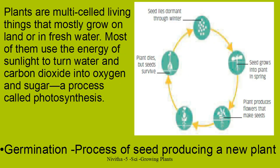How can plants be grown? Plants can be grown in very many ways. Most importantly, plants are grown from seeds. Seeds lie dormant during winter and then grow into a plant in spring. The plant produces flowers, flowers become fruits, the fruits have seeds inside them, and the seeds survive even if the plant dies. This is how the reproduction of a plant happens.